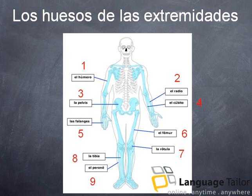Vamos a ir a unos ejemplos para utilizar nuestro nuevo vocabulario, una vez más. Uno. El húmero. Dos. El radio. Tres. La pelvis. Cuatro. El cúbito. Cinco. Las falanges. Seis. El fémur. Siete. La rótula. Ocho. La tibia. Nueve. El peroné.